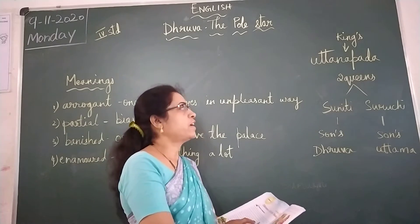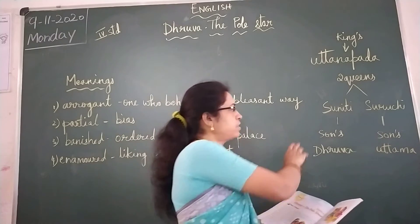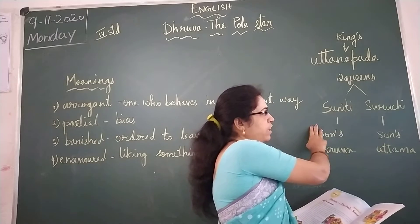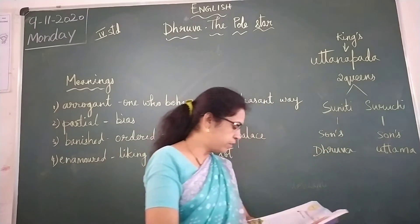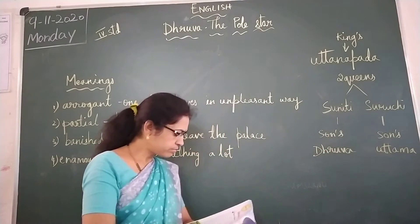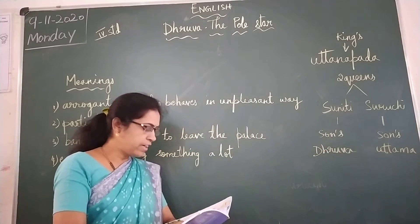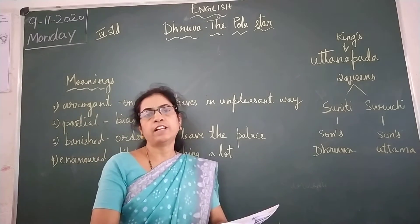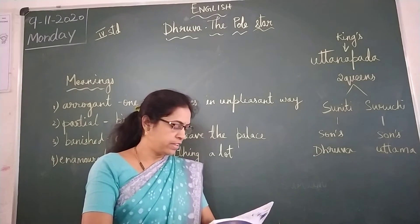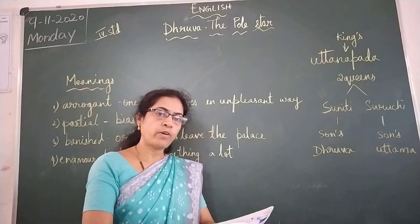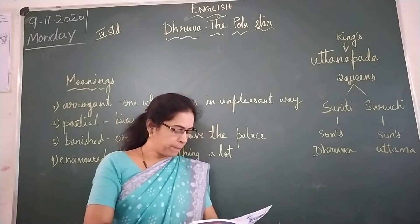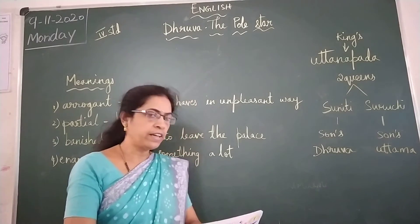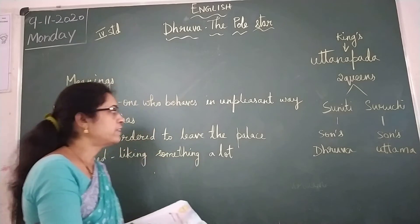Suniti was the elder queen and Suruchi was the younger queen. The elder queen was a quiet and gentle lady. But Suruchi was selfish, arrogant and cunning.